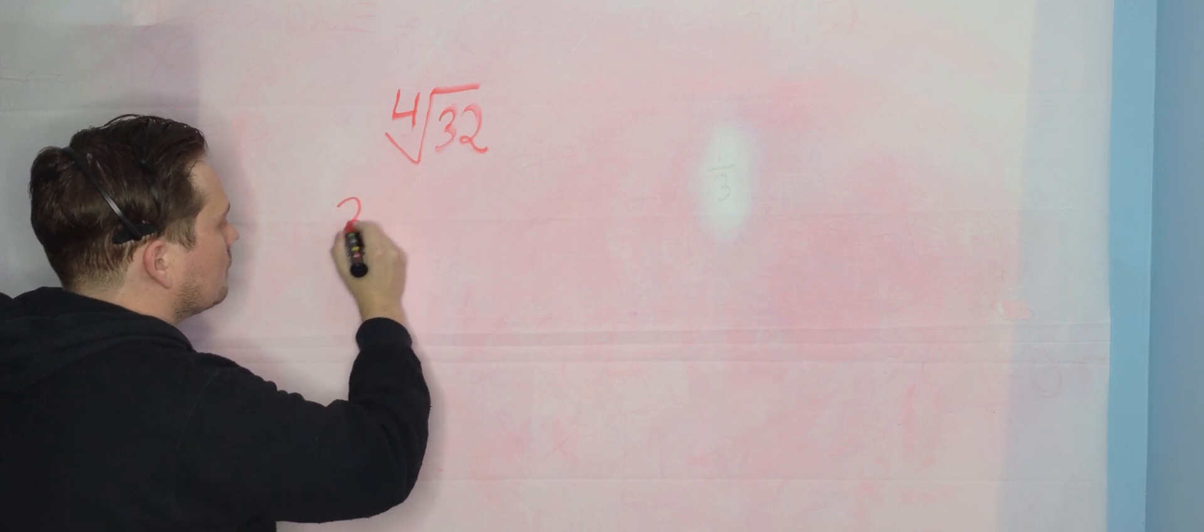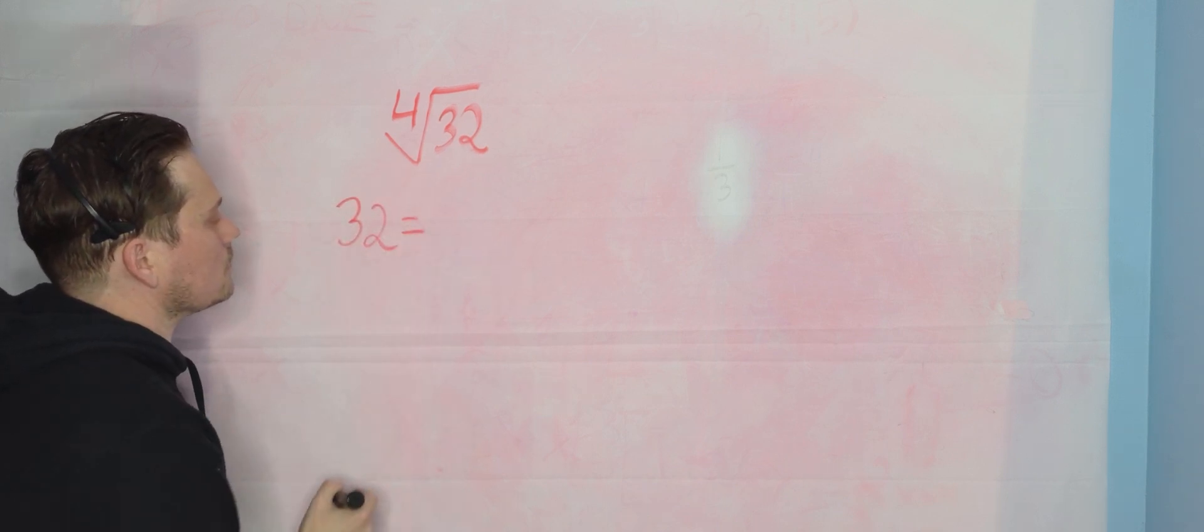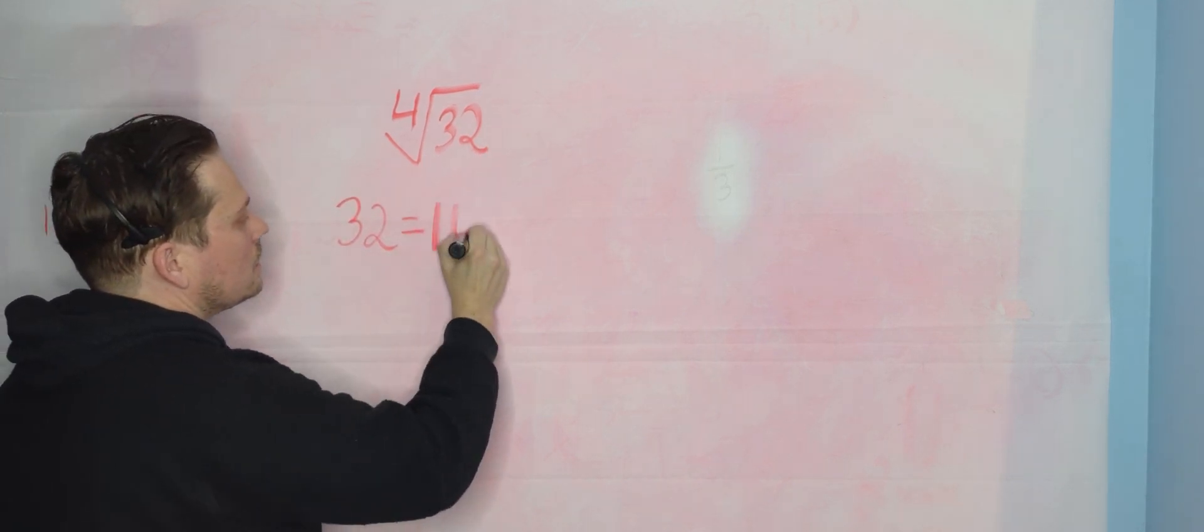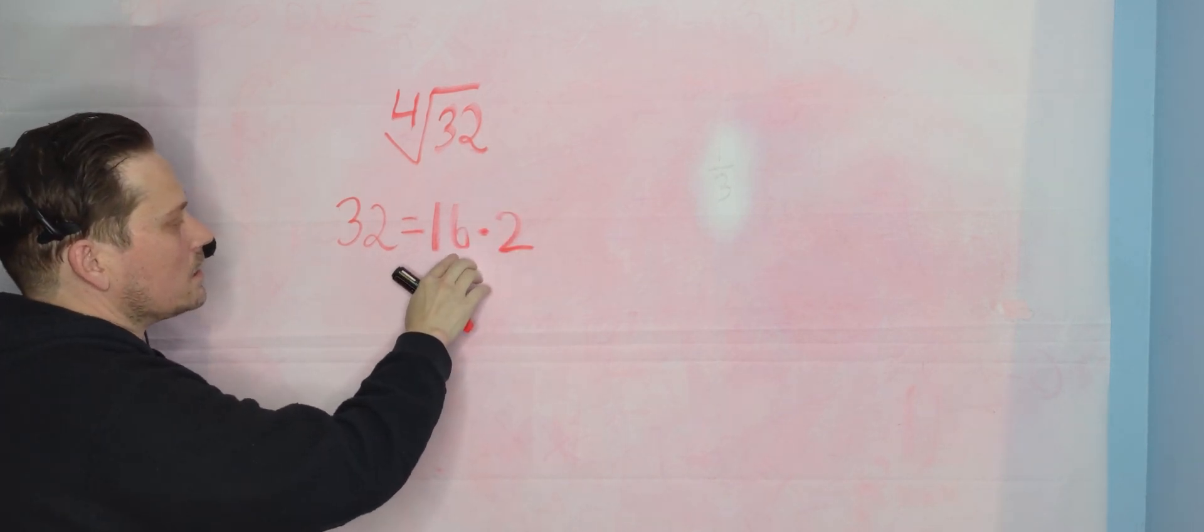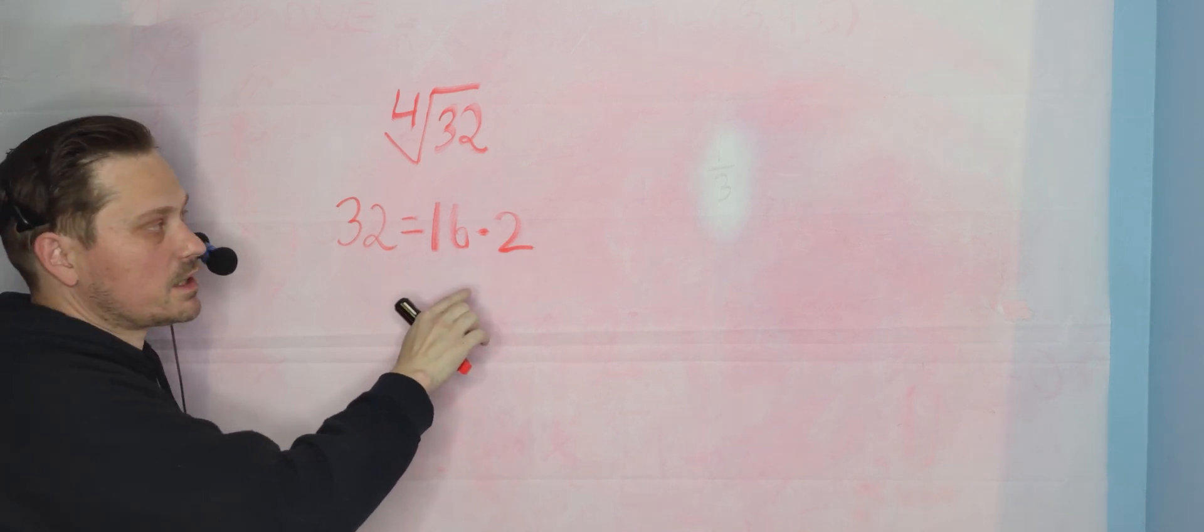Take a look at the number 32. 32 is equivalent to, for example, 16 times 2. But that's not good because we need something that has an exponent of 4 and we don't have that yet.